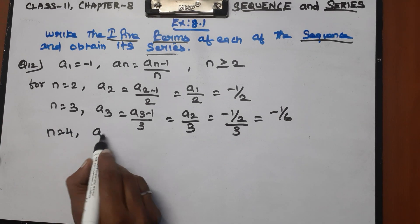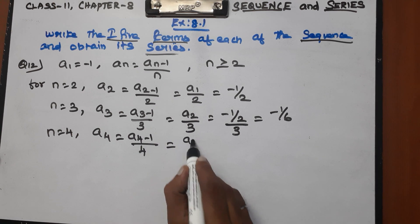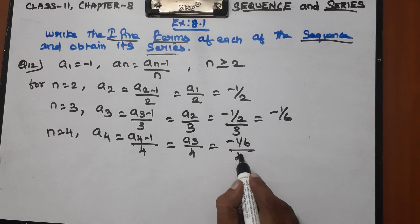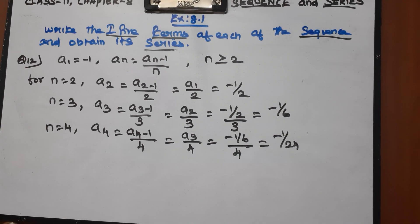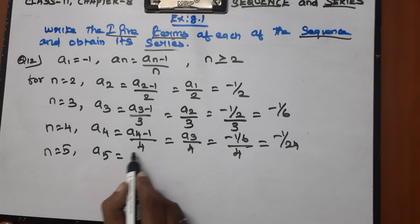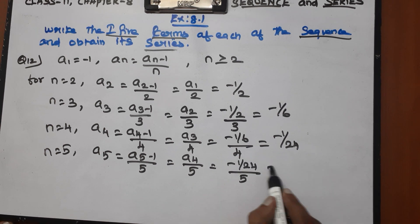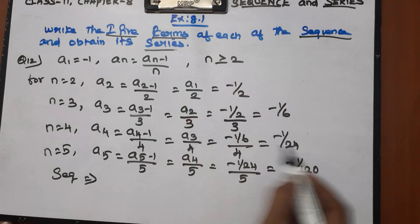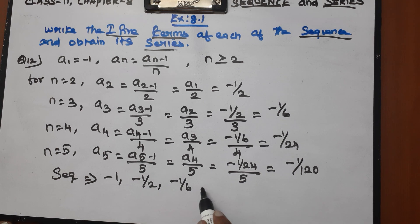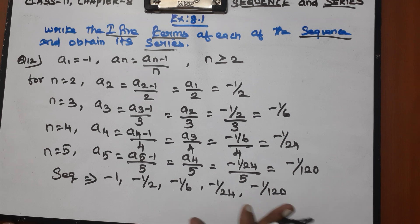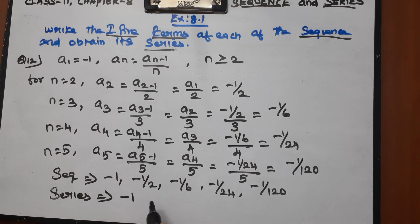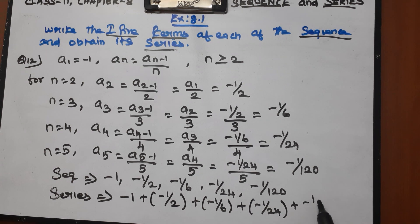For n equal to 4: a4 equals a3 divided by 4, equals minus 1 by 6 divided by 4, equals minus 1 by 24. For n equal to 5: a5 equals a4 divided by 5, equals minus 1 by 24 divided by 5, equals minus 1 by 120. So the sequence is: minus 1, minus 1 by 2, minus 1 by 6, minus 1 by 24, minus 1 by 120. The series is: minus 1 plus minus 1 by 2 plus minus 1 by 6 plus minus 1 by 24 plus minus 1 by 120.